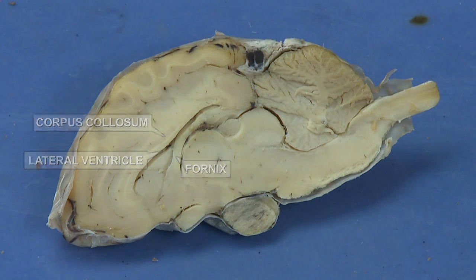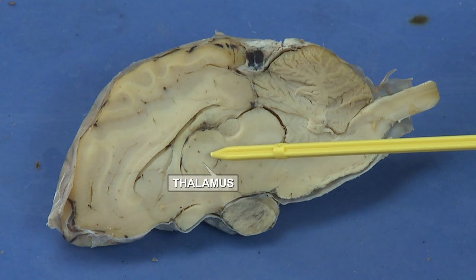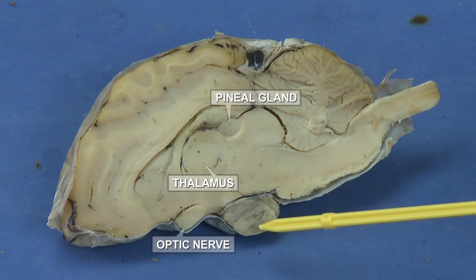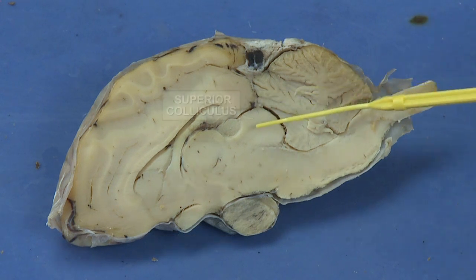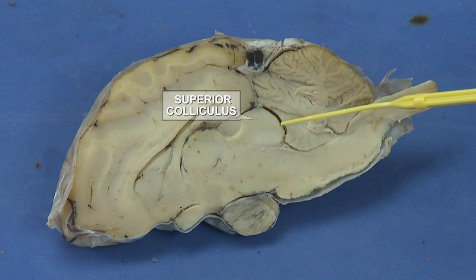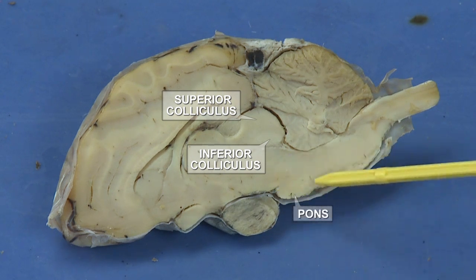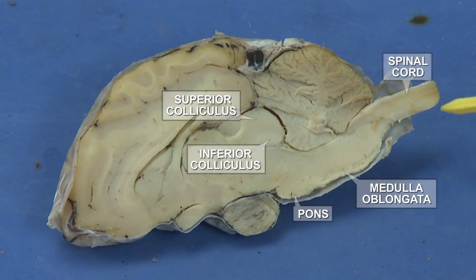Posterior to these structures we can observe the thalamus, pineal gland, optic nerve, and pituitary. Posterior to these structures are some structures of the midbrain, such as superior colliculi and inferior colliculi, which are not very visible here. Next structures are the pons, medulla oblongata, and spinal cord.